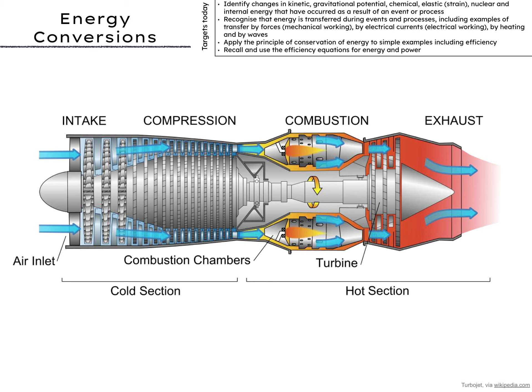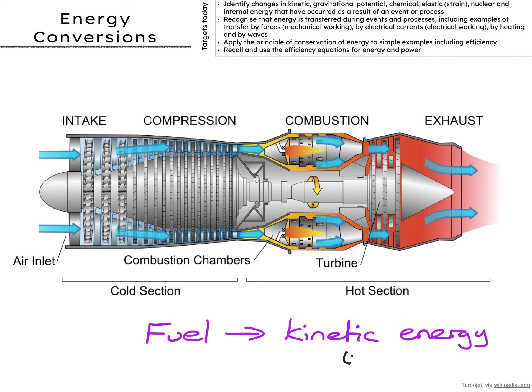The jet engine is a great example of this. You might think that we just take fuel — that's chemical potential energy — and convert it into kinetic energy, but it's quite a bit more complex than that. It starts at the front.